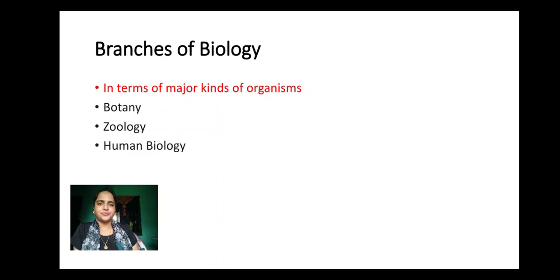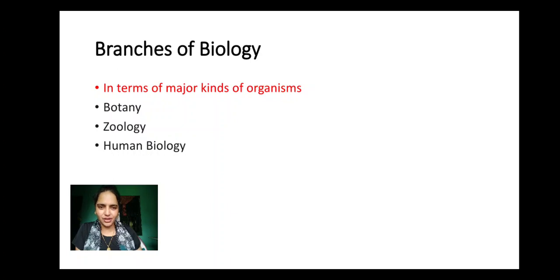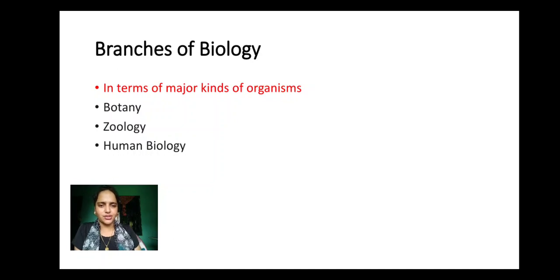We have different branches of biology. In terms of major kinds of organism, we have three branches: botany, zoology and human biology. Botany is the branch of biology which deals with the study of plant life. Zoology is the branch of biology which deals with the study of animal life. Human biology is the branch of biology which deals with the study of human beings and their relationship with both physical and social environment. Human biology is also called anthropology.